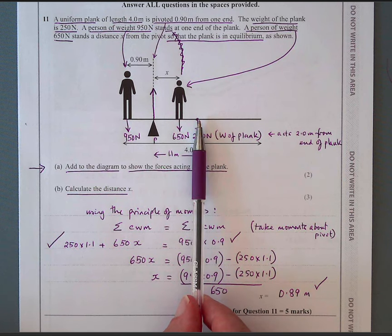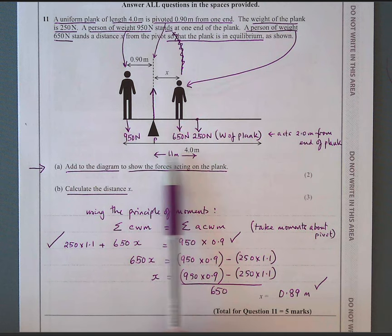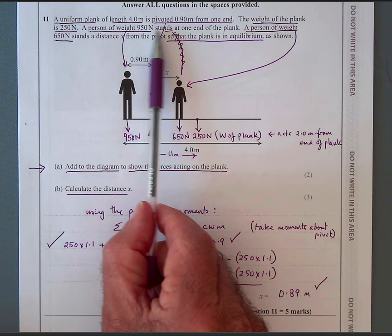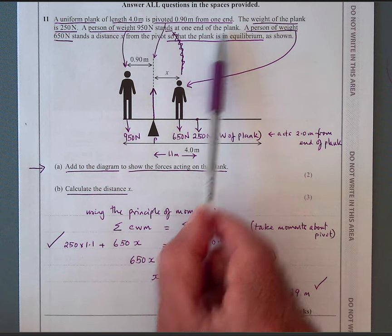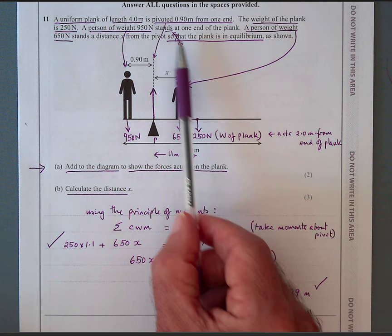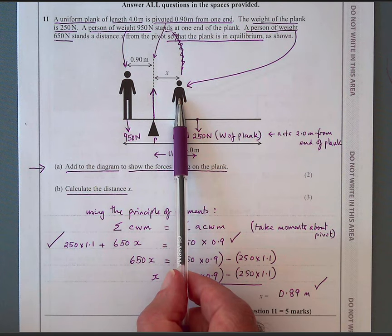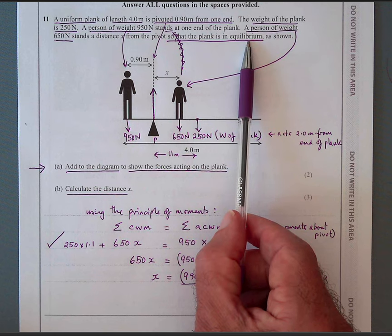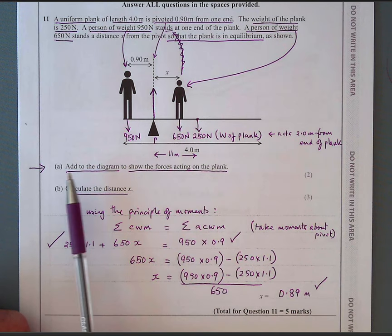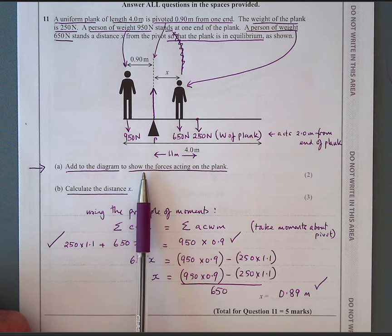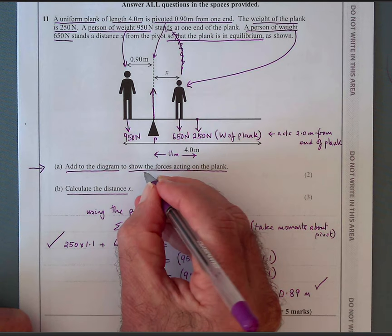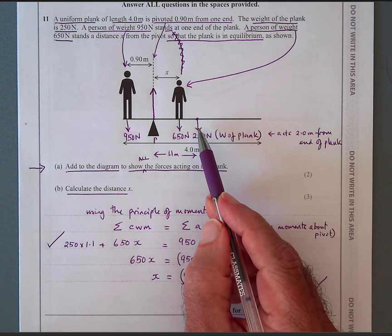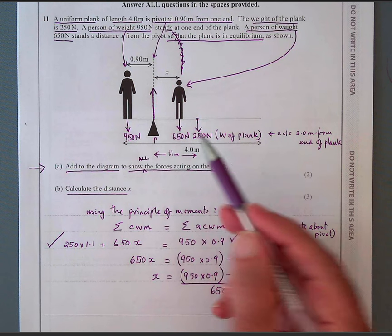A person of weight 950 Newtons stands at one end of the plank. A person of weight 650 Newtons stands at a distance x from the pivot, so the plank is in equilibrium as shown. They want you to add to the diagram to show all the forces acting on the plank — we've put in the weight of the plank and the weights of the two people. What have we missed?